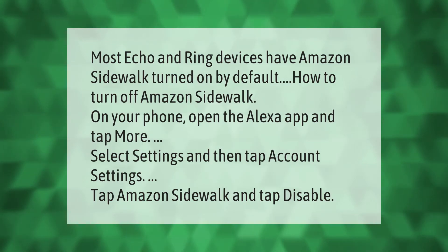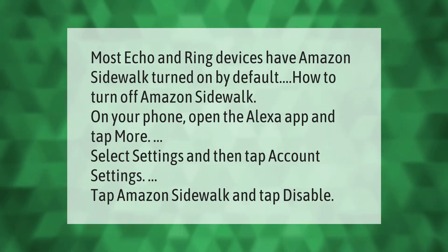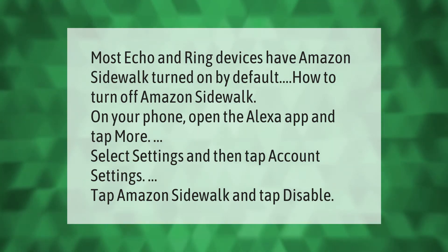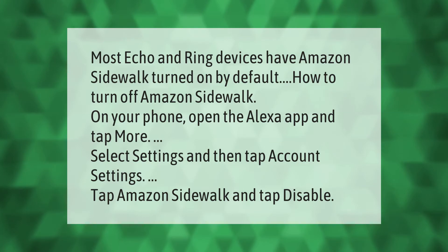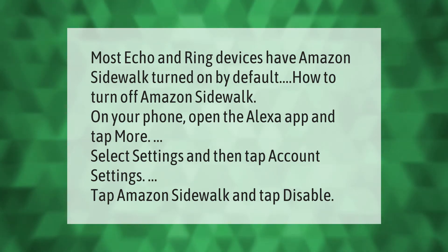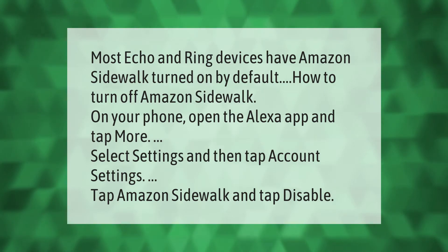Most Echo and Ring devices have Amazon Sidewalk turned on by default. To turn off Amazon Sidewalk on your phone, open the Alexa app and tap More. Select Settings and then tap Account Settings. Tap Amazon Sidewalk and tap Disable.